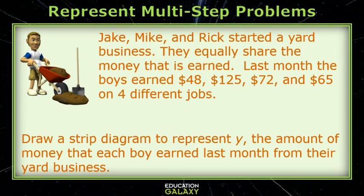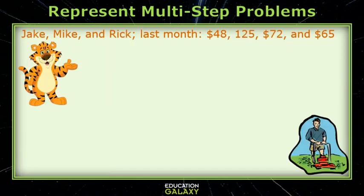Let's try another problem. Jake, Mike, and Rick started a yard business. They equally share the money that is earned. Last month, the boys earned $48, $125, $72, and $65 on four different jobs. Draw a strip diagram to represent Y, the amount of money that each boy earned last month from their yard business. Since there are three boys, if I knew the total amount of money, I could just take that number and divide by three to get the amount that each boy would get.